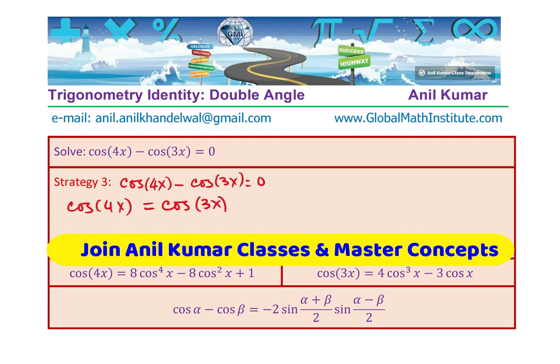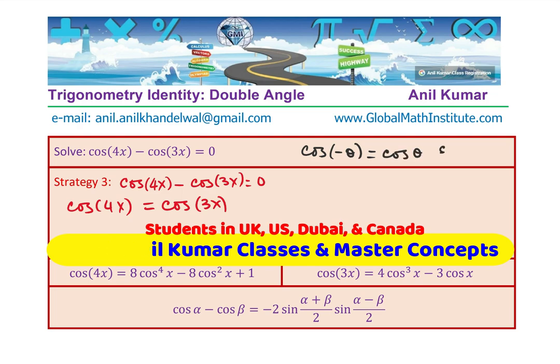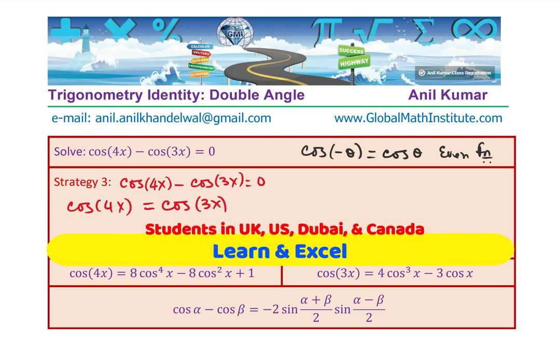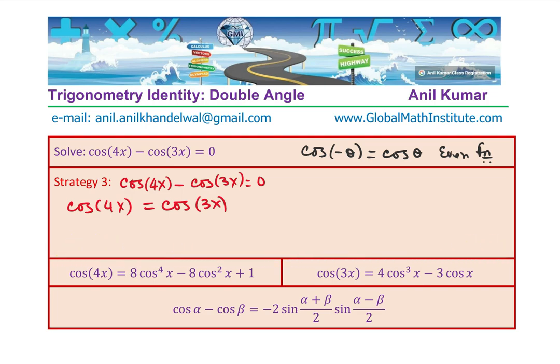When is this equal? This is equal under two conditions. You know cos is an even function. You should know one thing that is cos of minus theta is equal to cos theta. It is an even function. This is important to know otherwise you miss one set of solutions.